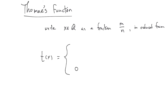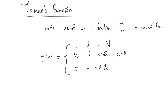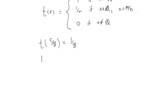I'll write it as t(x), t for Thomae. It's going to have three cases. The last case is zero if x is not rational. The first case — kind of a technicality — is one if x is a natural number. And then the interesting part: it's 1/n if x is in Q with x equal to m over n in reduced form. So for rational numbers, you write them as a fraction, and the answer is 1/n. For example, T(5/8) is 1/8. T(1/3) is 1/3. T(2/3) is also 1/3. Whatever the fraction is, you just use its denominator and change the numerator to a one.